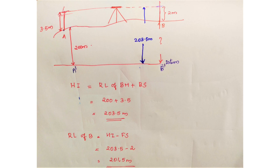Here is an example from a PSE exam question. We have two points, A and B. On the left side, A is the benchmark. The reduced level of A is 200 meters.